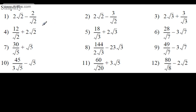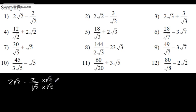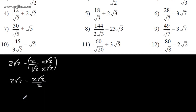We're now asked to simplify expressions where we're doing addition and subtraction, but we're going to have to rationalise first. For 2 root 2 minus 2 over root 2, we rationalise the denominator by multiplying the numerator and denominator by root 2, giving 2 root 2 over 2. The 2's cancel, leaving 2 root 2 minus 1 lot of root 2, which is just root 2.